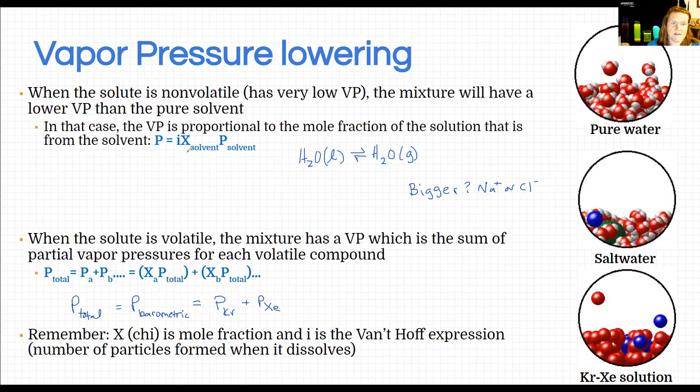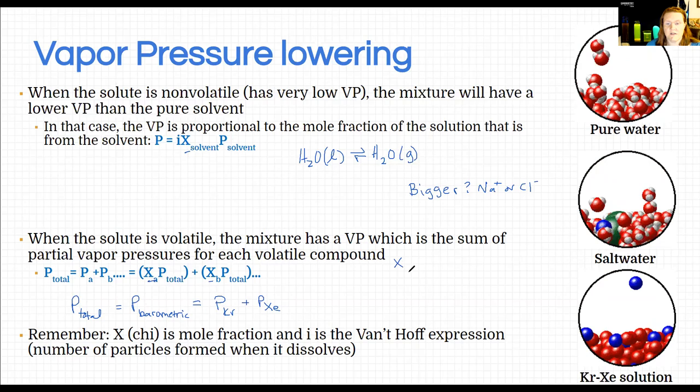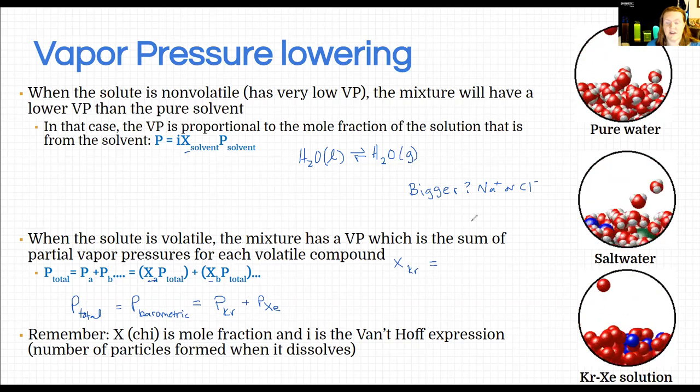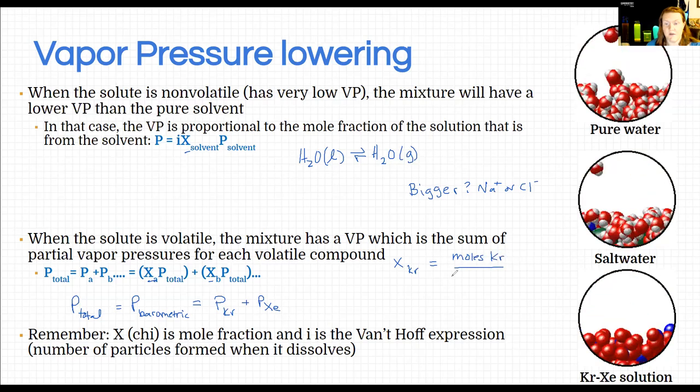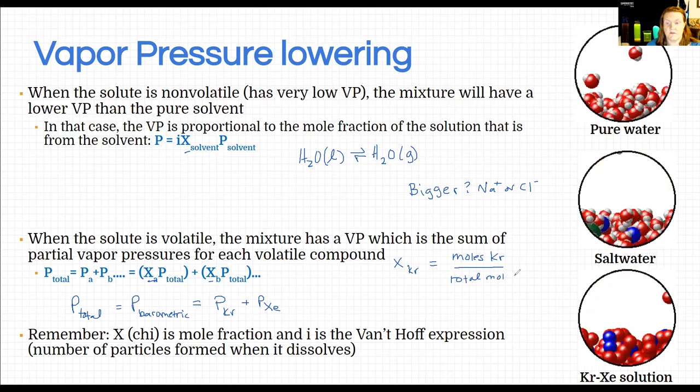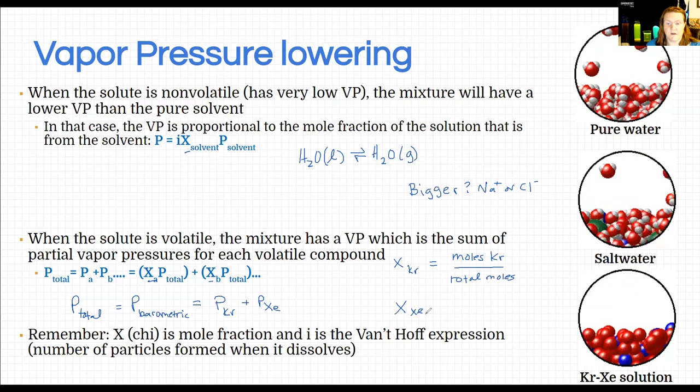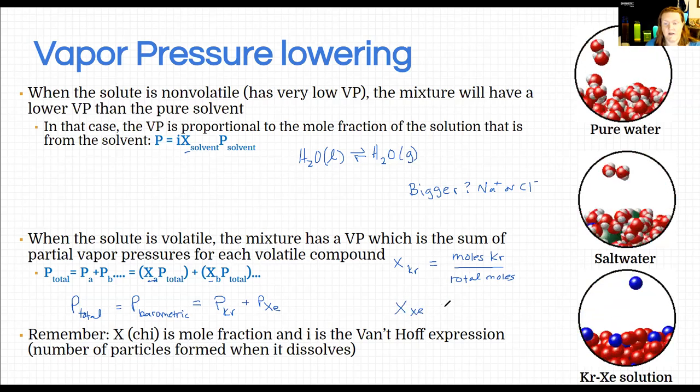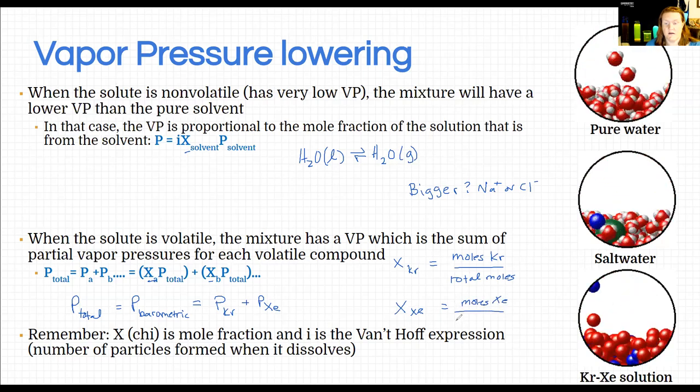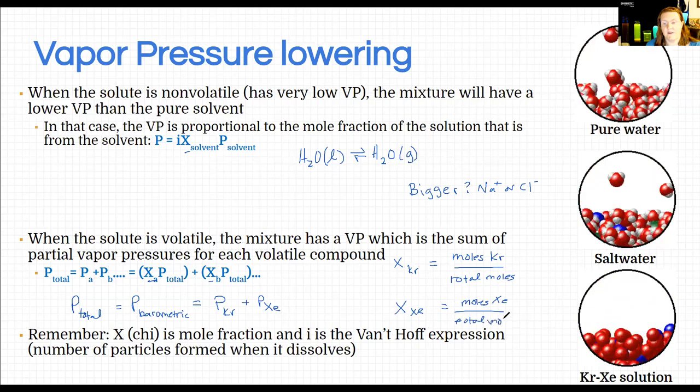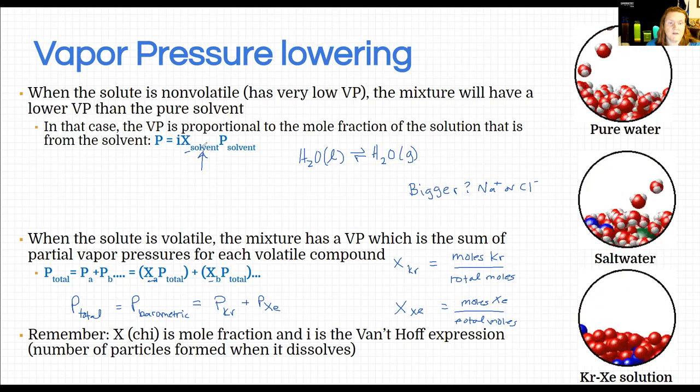Okay, each of those is related by what fraction of the total. So remember that this is not x, these are chi's. Chi is mole fraction. So when we're talking about krypton, the mole fraction of krypton is going to be the number of moles of krypton in the mixture divided by total moles. And similarly of course, the chi of xenon is going to be moles of xenon divided by the same total, right?